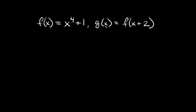In this video I'm going to teach you how to write a rule for g of x given f of x. Here we have the first problem. We're given f of x is equal to x to the fourth plus one, and our function for g of x is that g of x is equal to f of x plus two.